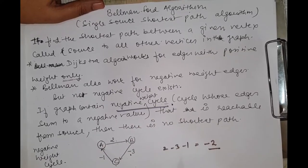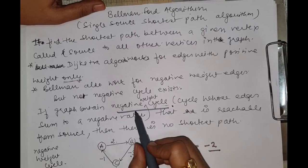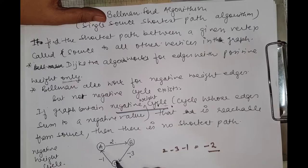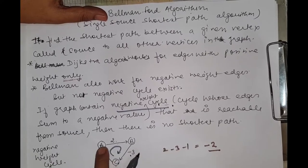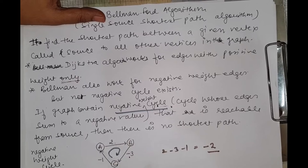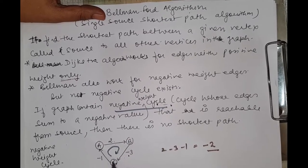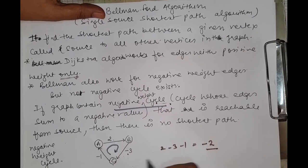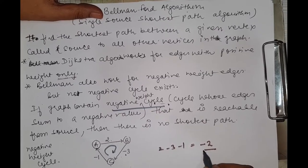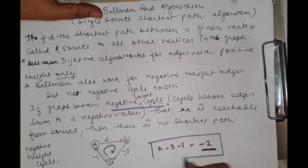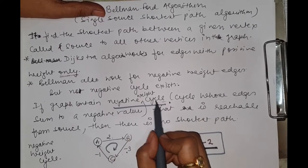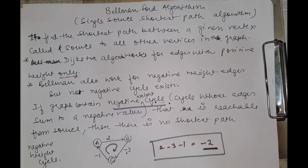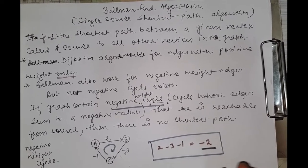What is a negative weight cycle? For example, there are three vertices A, B, and C forming a closed cycle path. The weights given on each edge include both negative and positive values. If the sum of the weights comes out to be negative — for example, 2 minus 3 minus 1 equals minus 2 — this total negative sum defines a negative weight cycle. If the graph has a negative weight cycle, then we cannot calculate the shortest path.